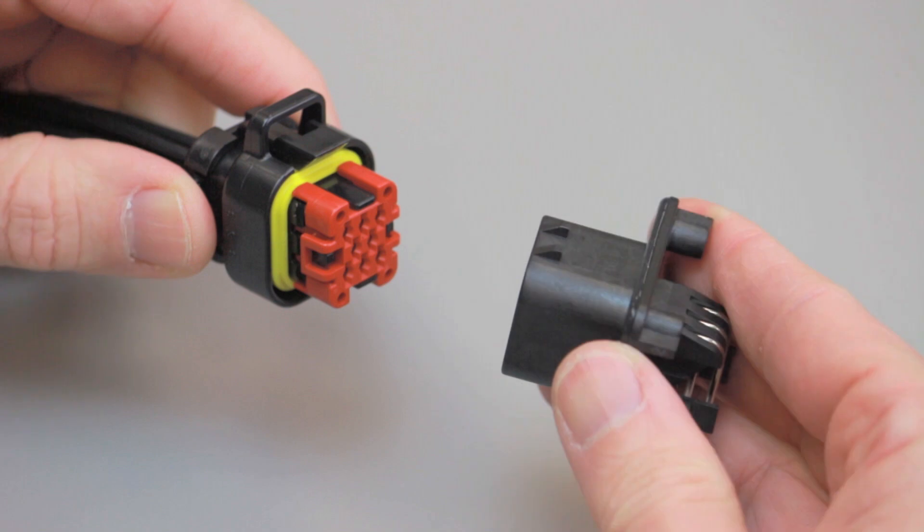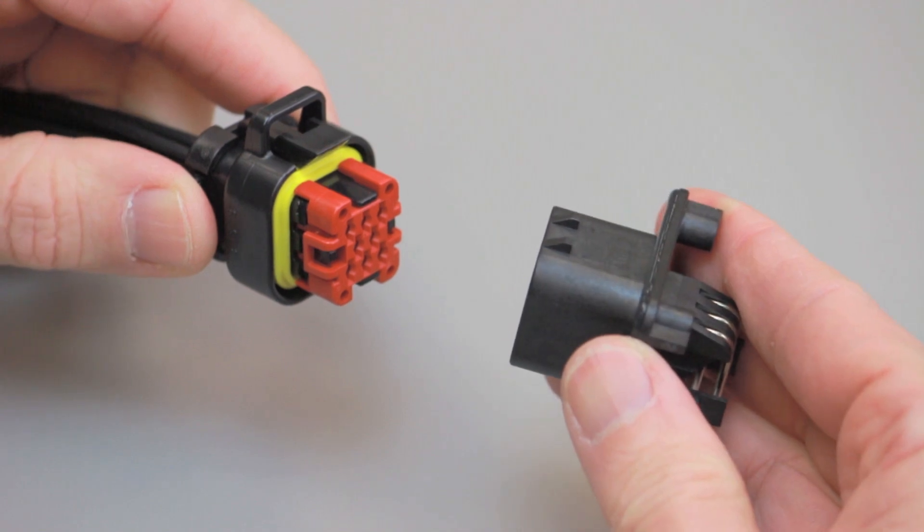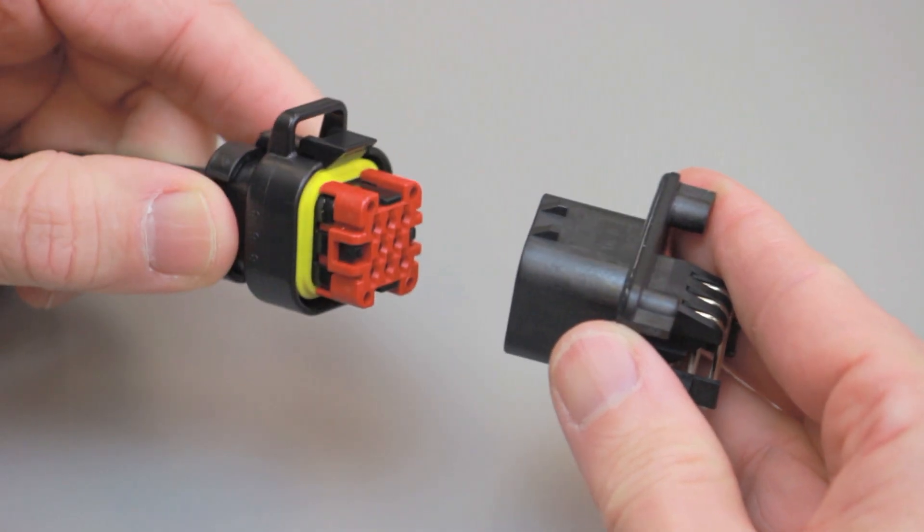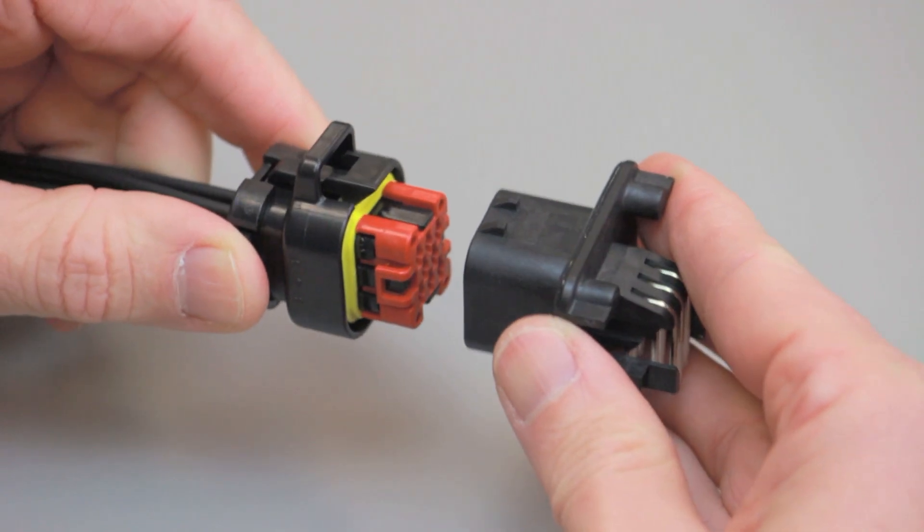All amp seal connectors are designed to be mated and unmated by hand. When mating amp seal connectors, grasp the receptacle contact housing by the body and align it with the PCB header.